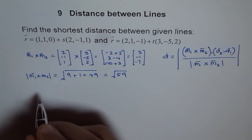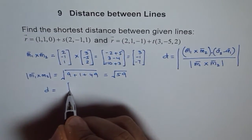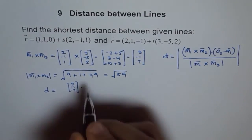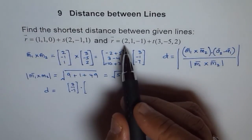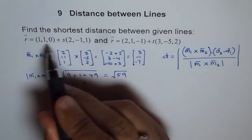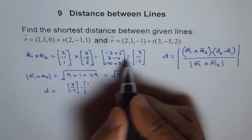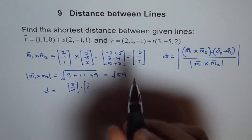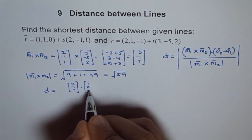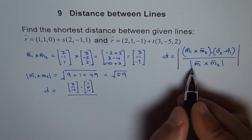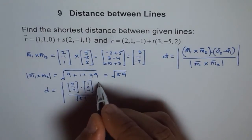Therefore the shortest distance D is equal to (3, minus 1, minus 7) dot (A2 minus A1), over the magnitude of M1 cross M2. A2 minus A1 gives us: 2 minus 1 equals 1, minus 1 minus 1 equals 0, and minus 1 minus 0 equals minus 1. This is over the square root of 59, and we take the magnitude of the dot product.